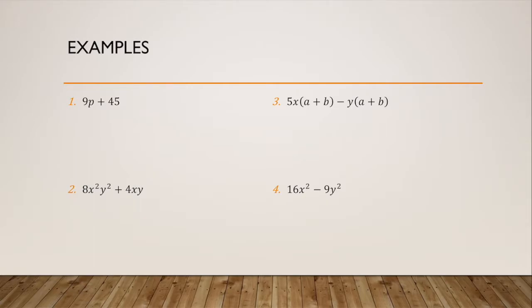For example one, 9P plus 45, first I'm going to want to do is factor out the greatest common factor, which is nine. So I'm left with nine times P plus five, and I can't factor this any further.